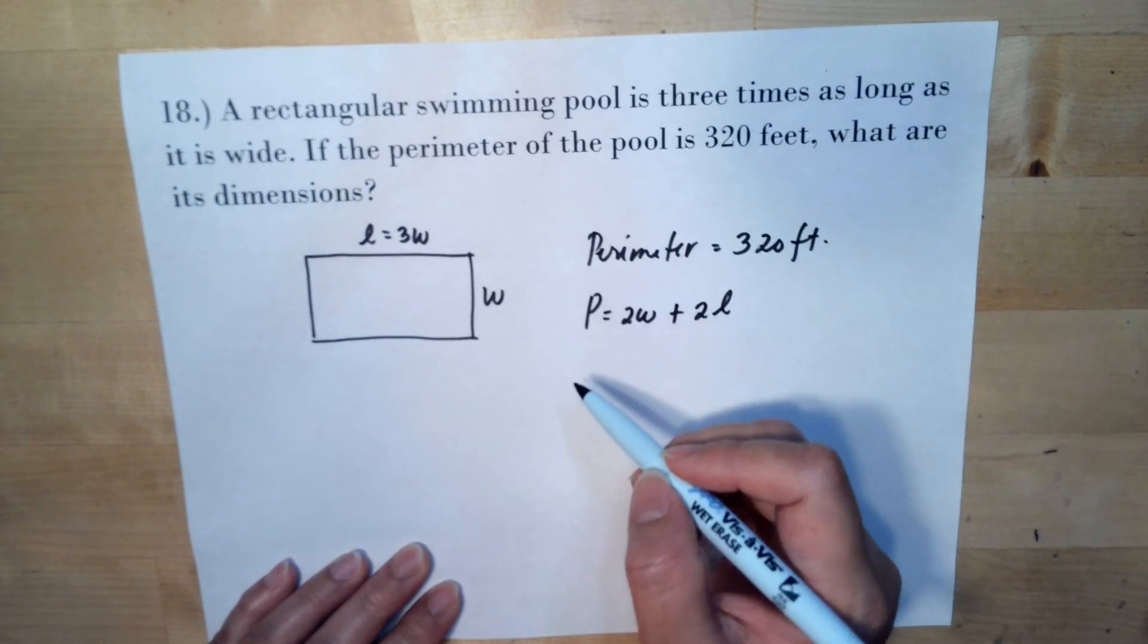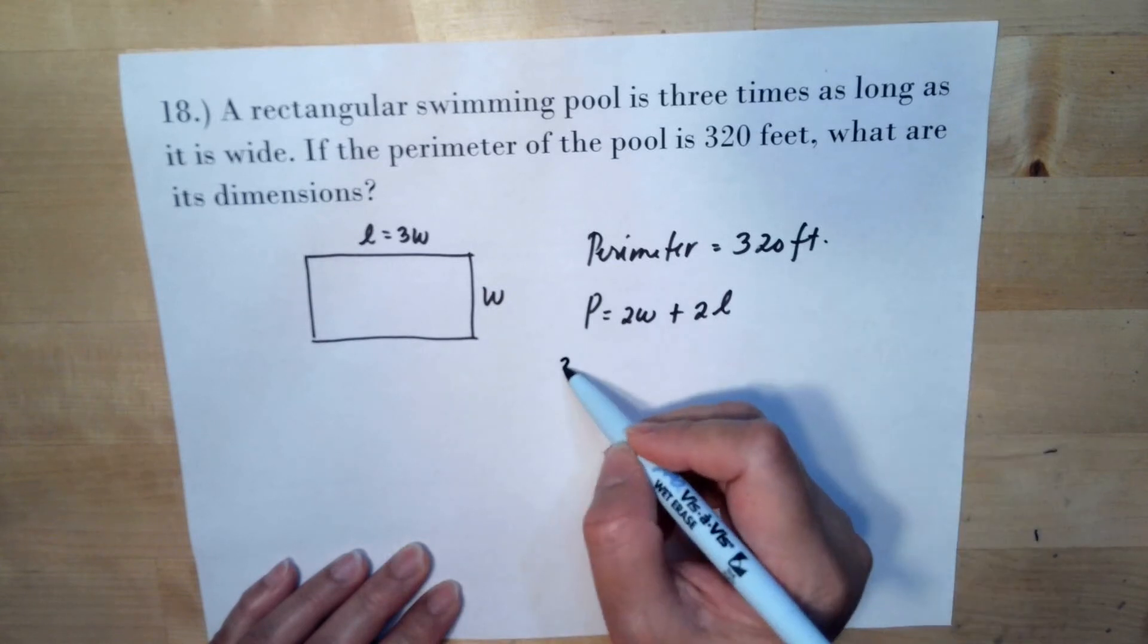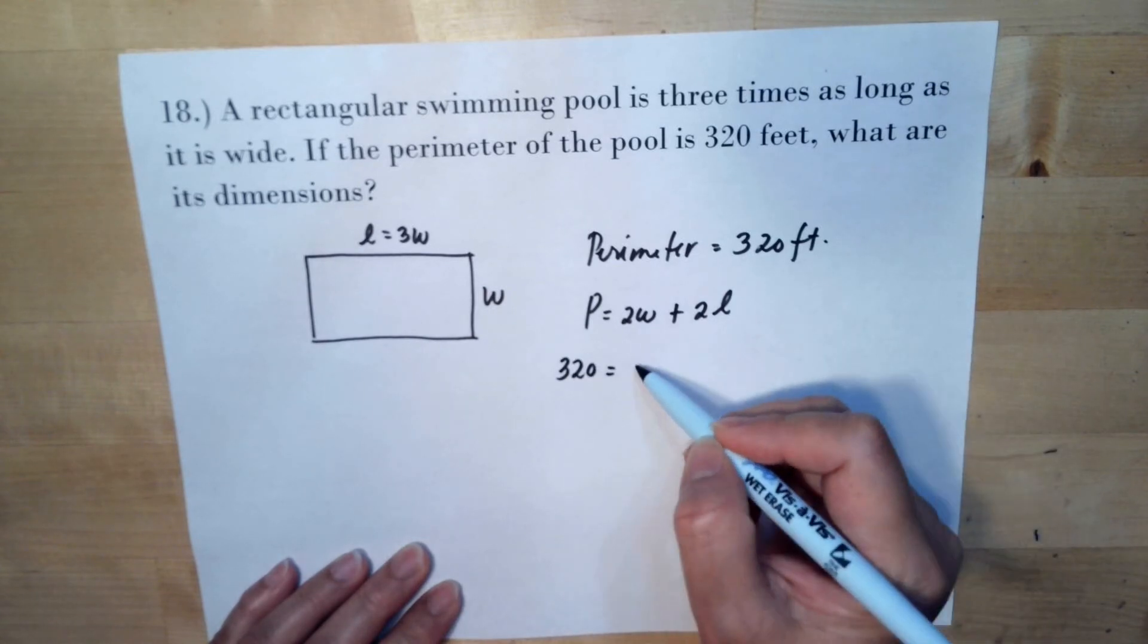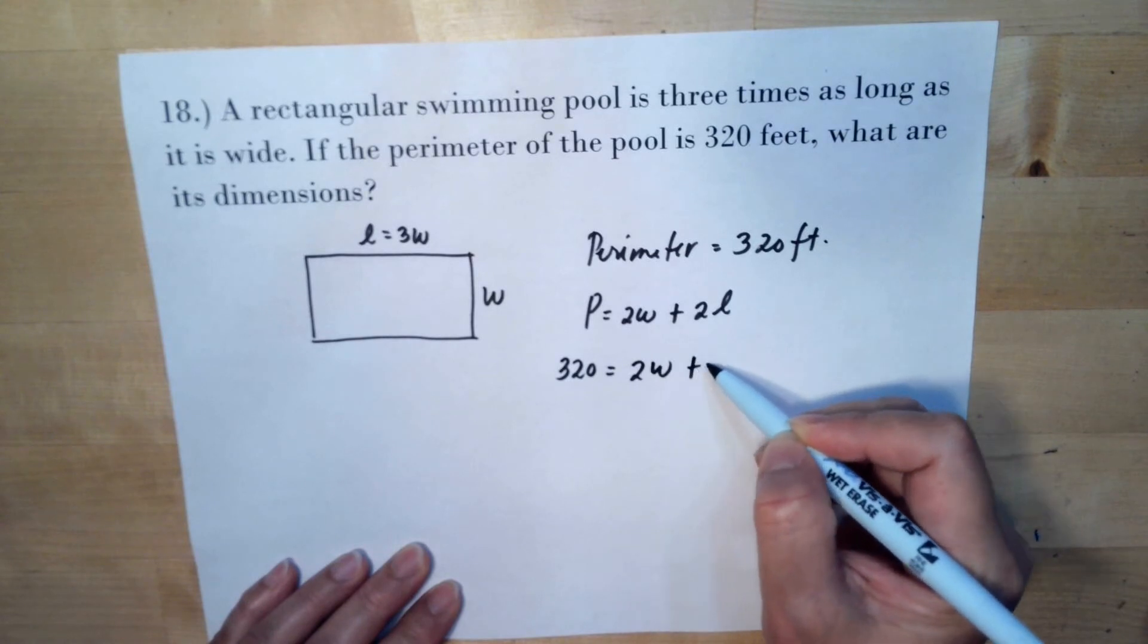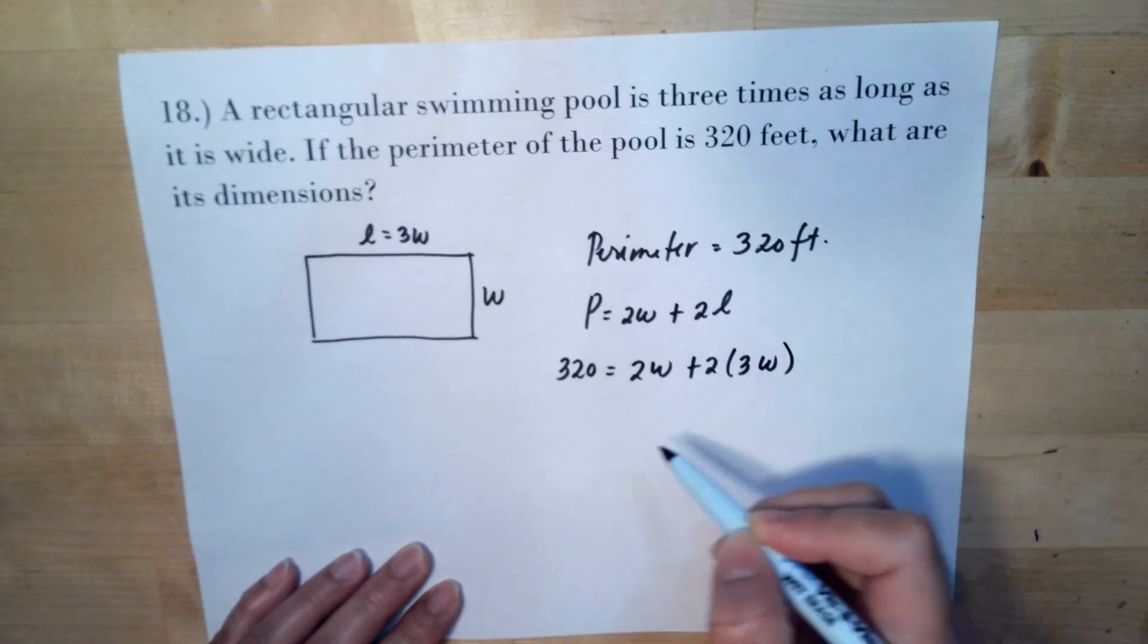Because perimeter, you just add all the sides. So our perimeter is 320. Then we have twice the width plus our length is three times the width.